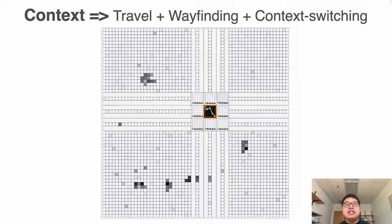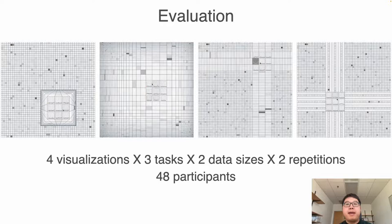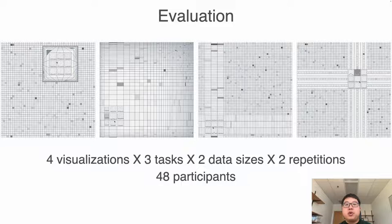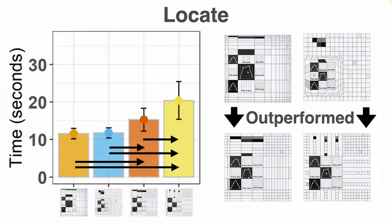We then ran a within-subject study with 48 participants to compare their performance. We found accuracy was high across all conditions, so we focused on analyzing the completion time. In the locate task, our participants were faster with fisheye and Cartesian than with the table lenses. Within table lenses, the stretched version was also faster than the step variation.